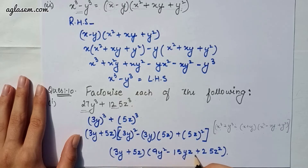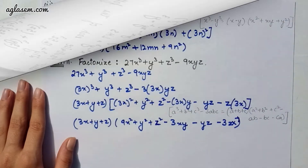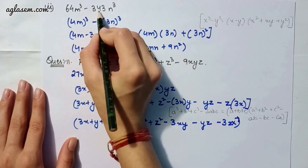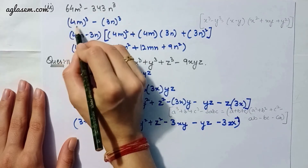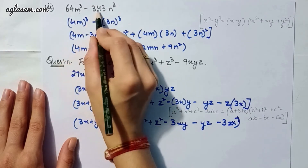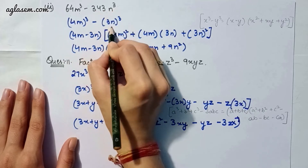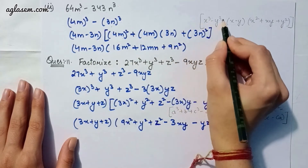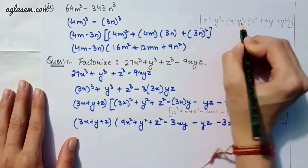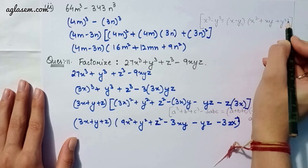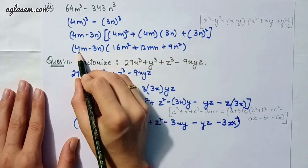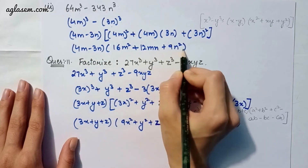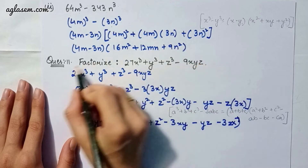Part two: 64m³ - 343n³. We can write 64m³ as (4m)³ and 343n³ as (7n)³. Applying the formula x³ - y³ = (x - y)(x² + xy + y²), we get (4m - 7n)(16m² + 12mn + 9n²).